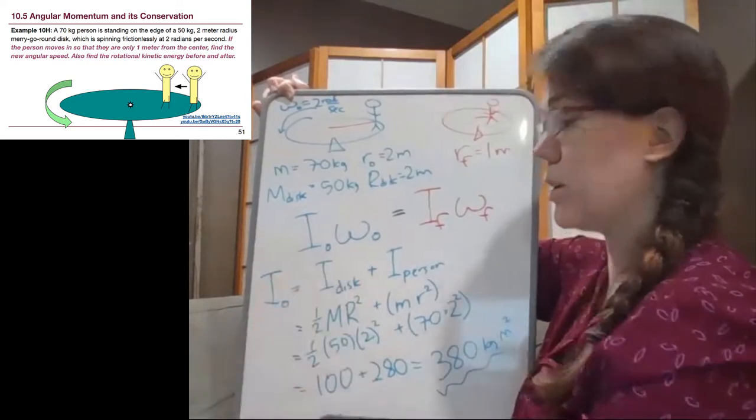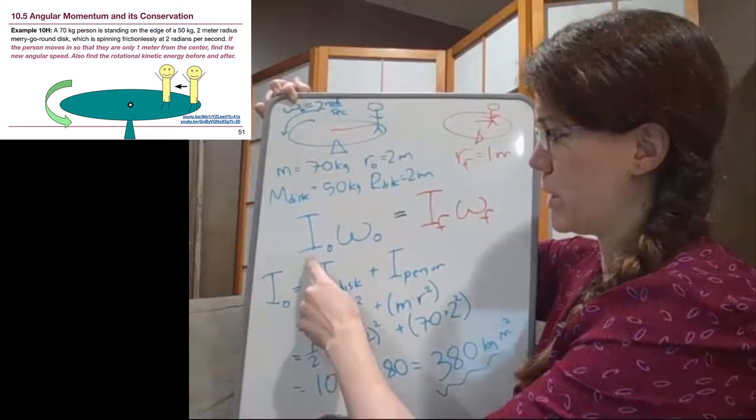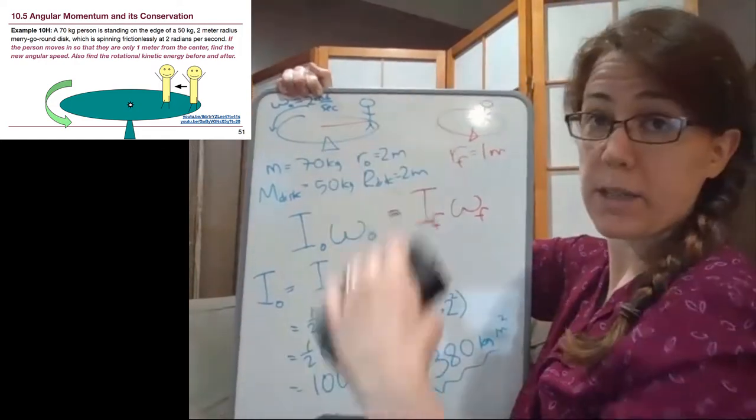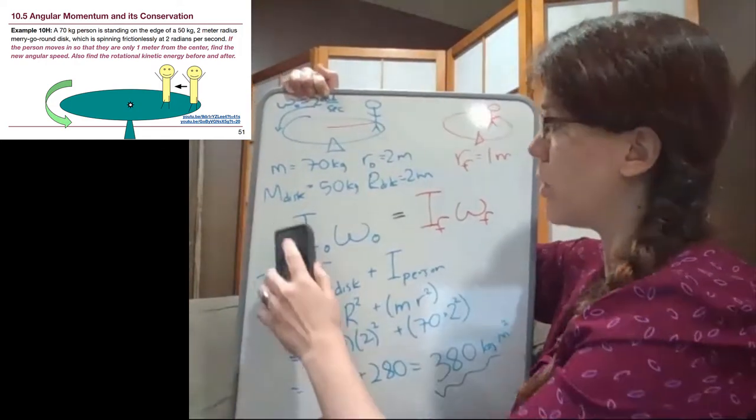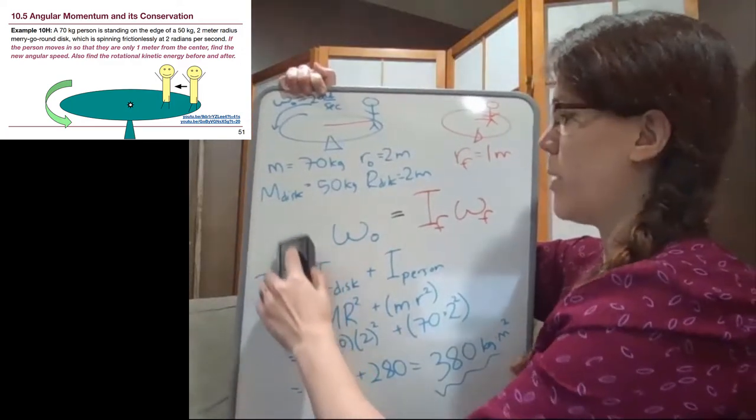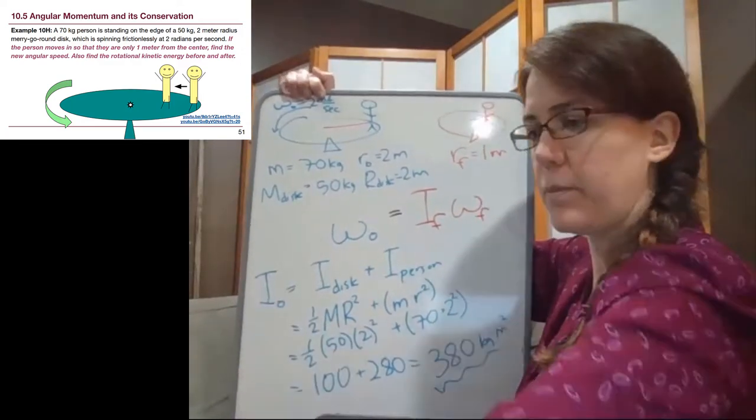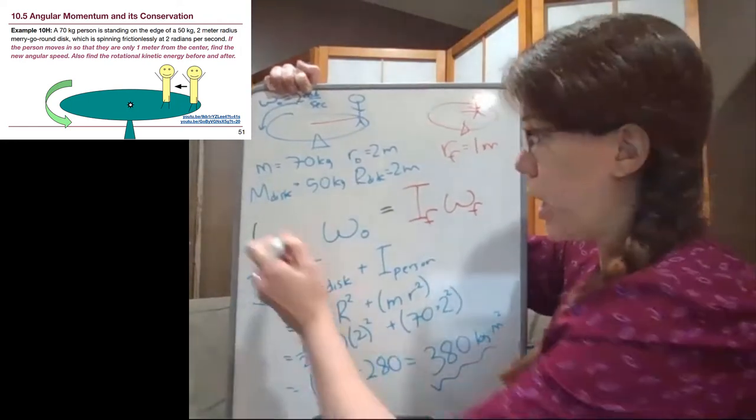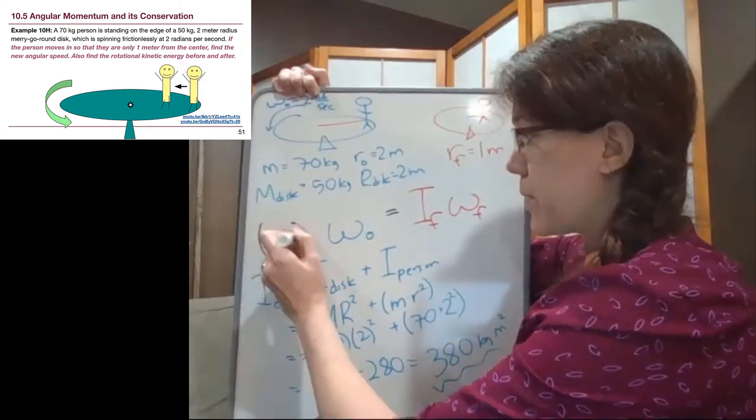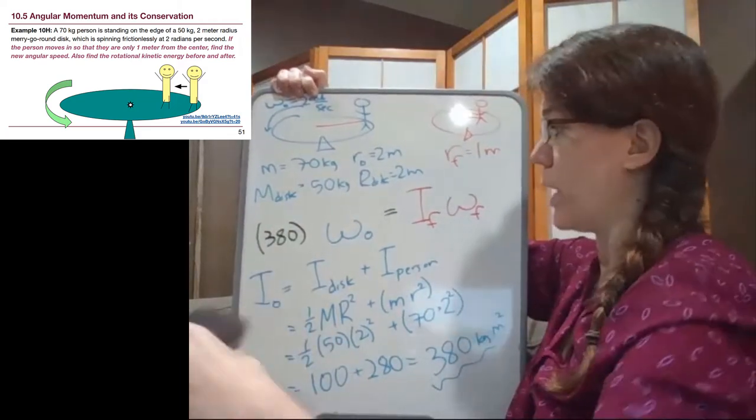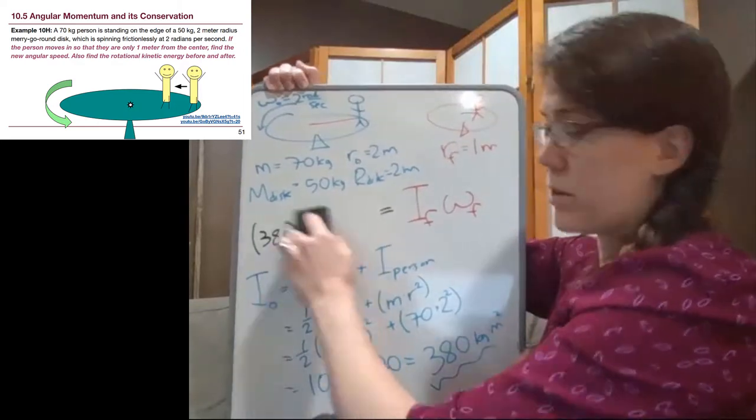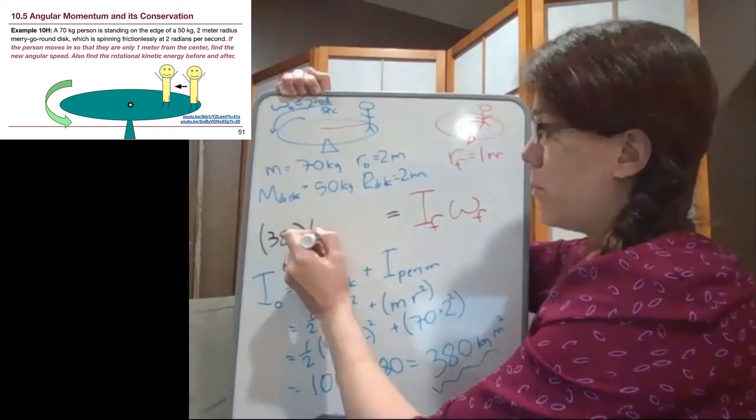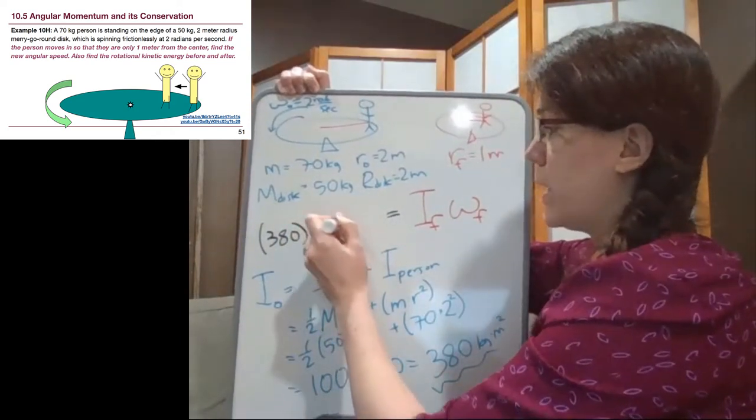And so we have 380 kilogram meters squared. That's the initial I, the moment of inertia. So I'm going to plug that into the equation. You should rewrite it below all of this. But as we know, I'm working with a smaller amount of space than you are. So what we just calculated was that the moment of inertia at the beginning of the problem is 380 kilograms meters squared. And I'm going to plug in, because we're plugging in numbers at this point, that the initial angular speed is two radians per second.